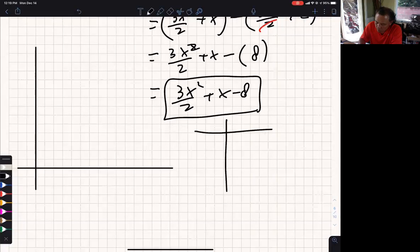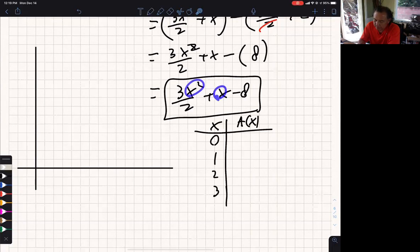Not too large. X and A(x). I'll do 0, 1, 2, and 3. Plug in 0, I'm going to get negative 8. Plug in 1. If I plug a 1 right there, that's 3 halves plus 1, which would be 2½. And then 2½ minus 8 is negative 5½.